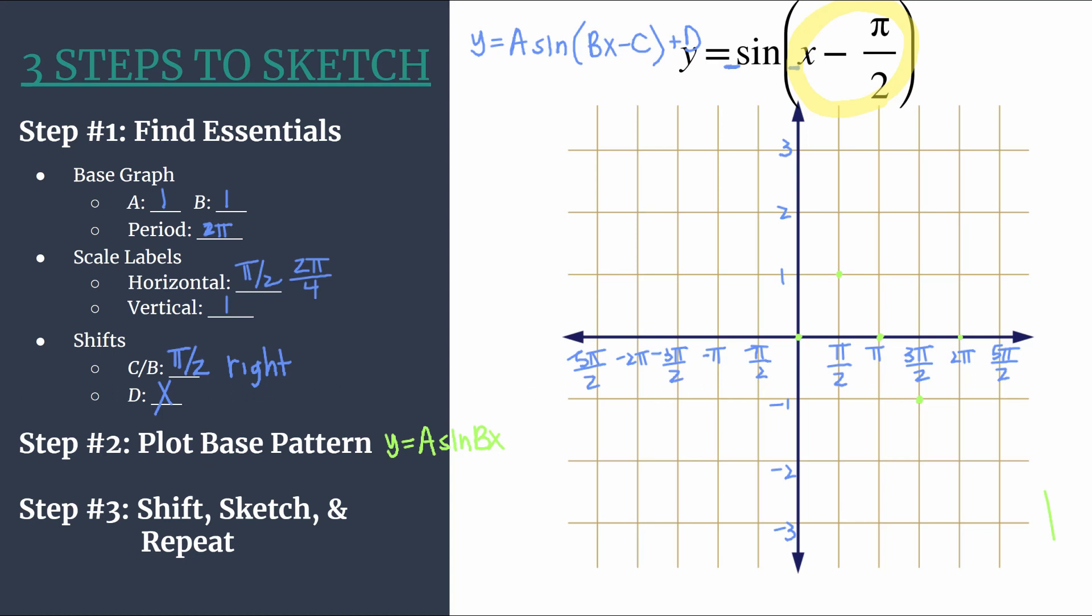Our only shift is to move each of these green base points to the right pi over two, so that's one horizontal grid unit. Take each point, shift it right pi over two. I'm going to make these points larger because we know these will be our final points. So each green point just moves to the right one grid unit which is equal to pi over two.